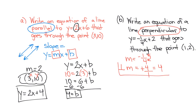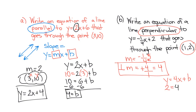So my new slope will be four. Now, again, I need a point because I have y equals four x plus b, so I do need the y-intercept. They give me the values one, two. So wherever there's an x, I'm going to replace it with the one. Wherever there's a y, I'll replace it with the two. So y is two, and then it's four times x, which is one, plus b.